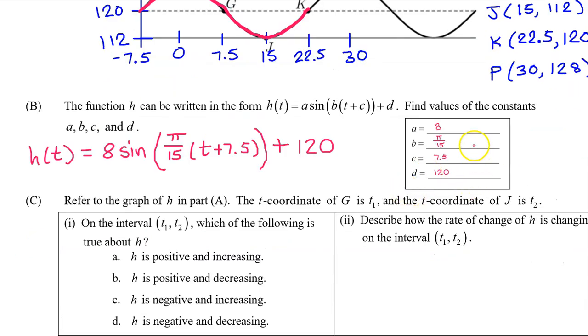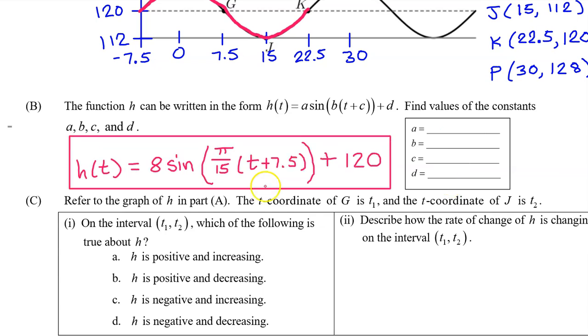On the AP exam, they will give you an answer box, and you are welcome to use it to record the values of a, b, c, and d, like this. Or you can leave the answer box blank and record your answer as an expression for h(t) with the values of a, b, c, and d filled in, like this.